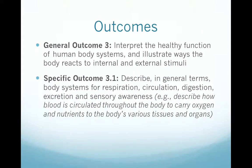We have to look at the outcome. We're talking about general outcome 3 — where we interpret the healthy function of human body systems and illustrate ways the body reacts to internal and external stimuli. We're dealing with specific outcome 3.1, describing in general terms body systems for respiration, circulation, digestion, excretion, and sensory awareness.